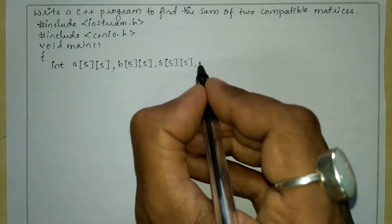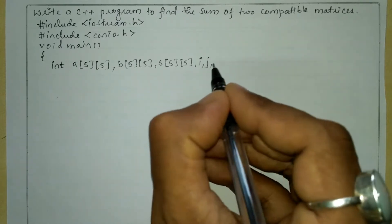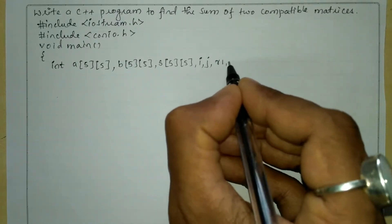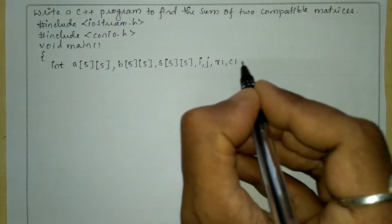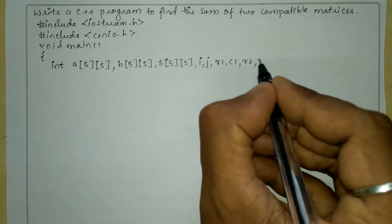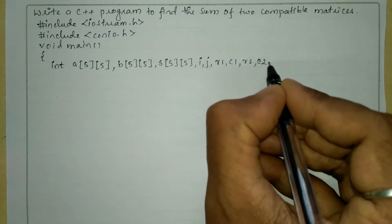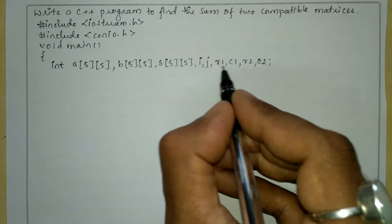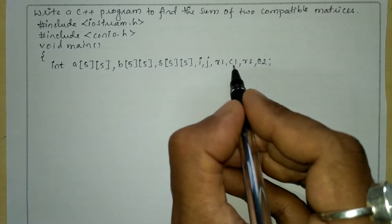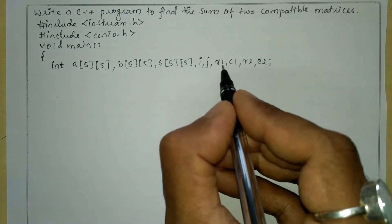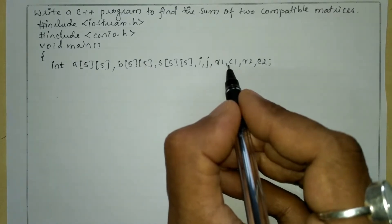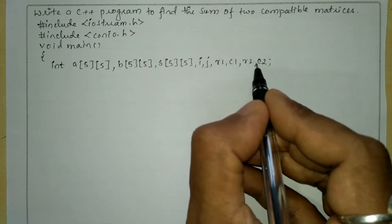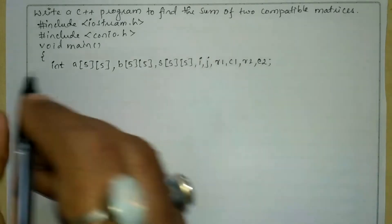Next we are going to declare the indices I and J, and then R1 and C1, R2 and C2. Here R1 and C1 are the row and column of the first matrix, and R2 and C2 are the row and column of the second matrix.